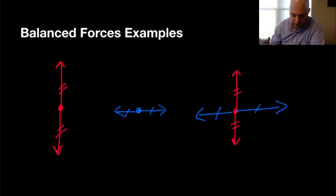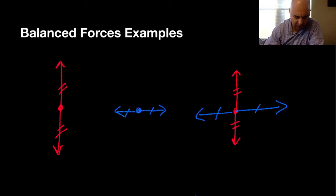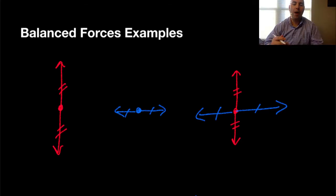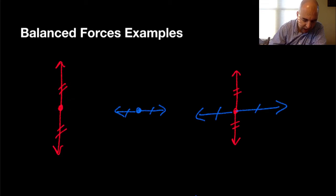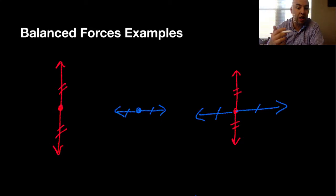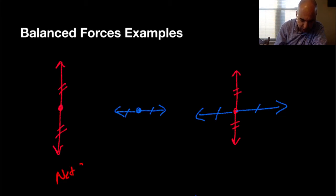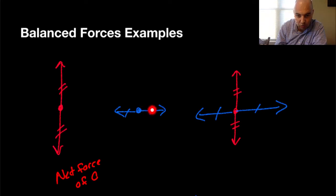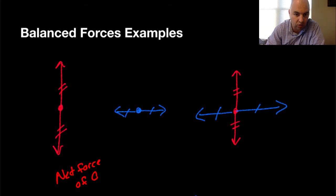Let me give you some examples of what balanced forces would mean. Balanced means it evens out or cancels out. For example, here I have a force going up and a force going down. Because they are the same magnitude but opposite in direction, they are balanced out — they've canceled each other out. So another way of saying that is you have a net force of zero. Same thing here: we've got a force going to the right and an opposite force going to the left the same amount, so those would balance each other out.